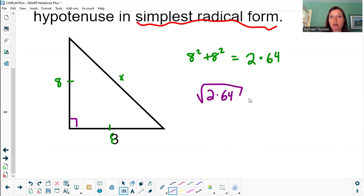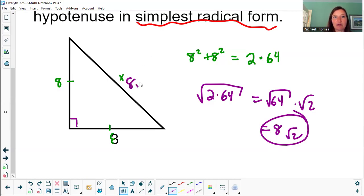Square root of 2 times 64, that's like the square root of 64 times the square root of 2. The square root of 64 is 8. Bam. 8 root 2.